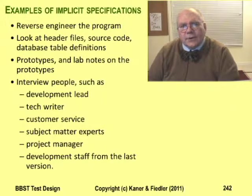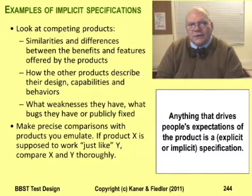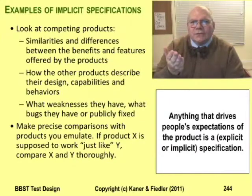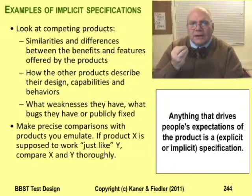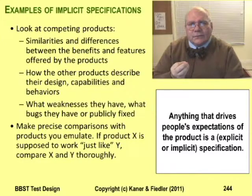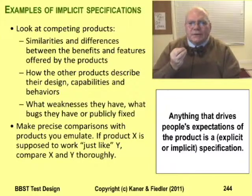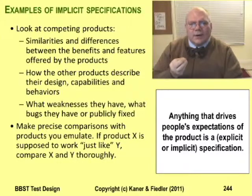You can also get useful information from the code and from interviews with knowledgeable or influential people. Your company uses tools, code libraries, and content from other sources — their specs are your specs. Finally, look at competing products. In the foundations and bug advocacy courses you worked with OpenOffice; Microsoft Office is an implicit specification for OpenOffice. If something works a certain way in Microsoft, you should expect it to work that way or better in OpenOffice. Anything that drives people's expectations of the product is a specification. Quality is value to some person, not necessarily you. If someone has a reasonable basis for expecting the product to do something and it doesn't meet that expectation, then for that person, that's a failure of quality.